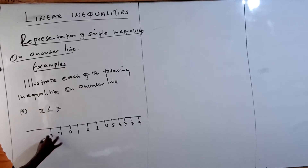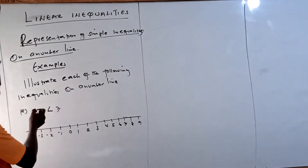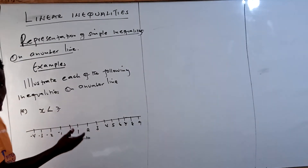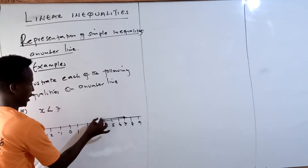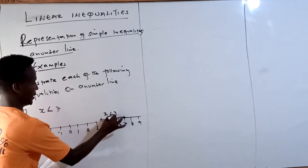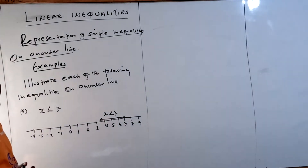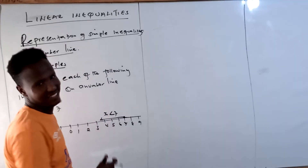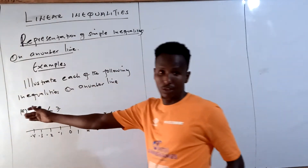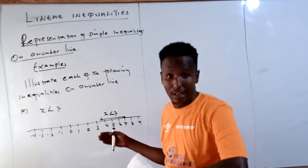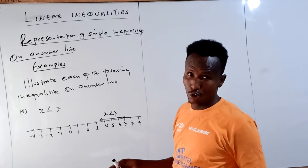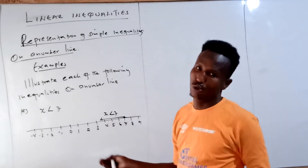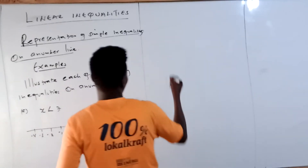On the left: negative 1, negative 2, negative 3, negative 4. I want to present x is less than 7. So you stand at 7 and draw an arrow on the left side, because x is less than 7 — you start from 7 and move to the left to show that the possible value of x can be any number less than 7.